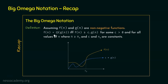The updated definition is: Fn equals big omega of Gn if and only if Fn is greater than or equal to C times Gn, for some C greater than 0 and for all values of N greater than or equal to N0, where C and N0 are constants. This exact definition will help us understand the little omega notation.